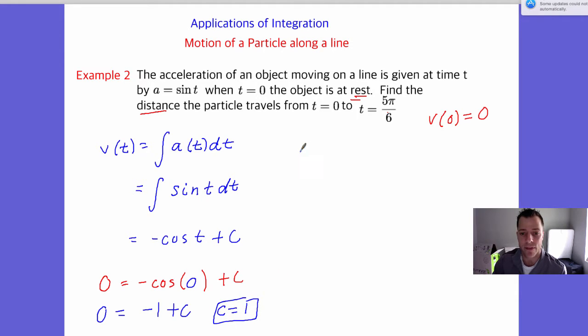So now I have the velocity equation that I need. I have velocity equals negative cosine of t plus one. Now, I want to know from zero to five pi over six, I want to know the total distance. So I'm going to integrate negative cosine of t plus one dt.